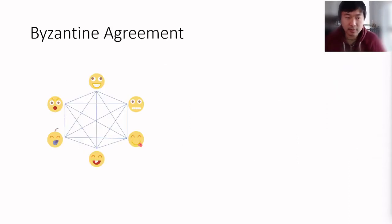So, what is Byzantine agreement? Byzantine agreement is a distributed protocol among a bunch of parties which are connected via some communication network, and basically the setting is each party has their own input, so PI has XI as input, and they need to compute an output that satisfies two security guarantees.